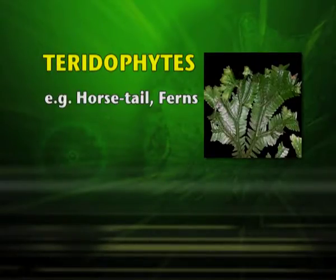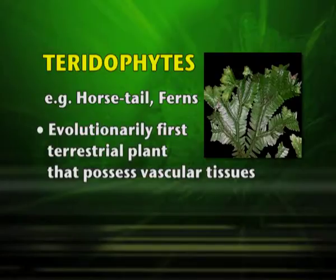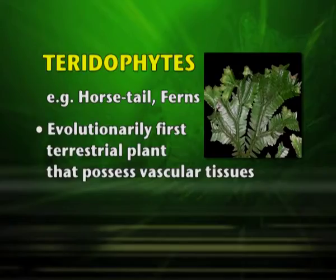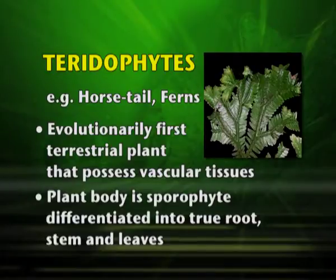Pteridophytes include the horsetail and ferns. Evolutionarily, they are the first terrestrial plants to possess vascular tissues — unlike algae and bryophytes which did not have vascular tissue. The plant body is sporophyte and is differentiated into true root, stem, and leaves.